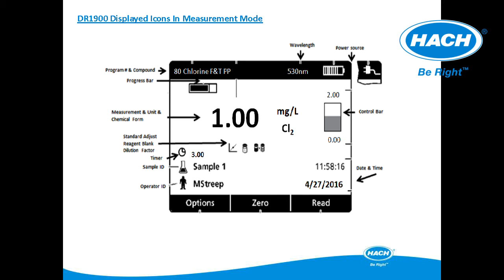Besides the measurement information previously discussed, there are additional software features that make the DR-1900 versatile and suitable for multiple applications. The DR-1900 has a timer function that is saved for those programs that require a specific time for reaction. Using the advanced options menu, a standard adjust, reagent blank, chemical form, or dilution factor can be entered. The icons are displayed on the measurement screen during the measurement and in the data file for easy recognition. The progress bar provides easy recognition of when the method and measurement is complete and results can be recorded.